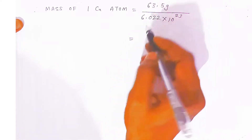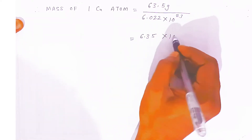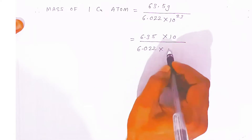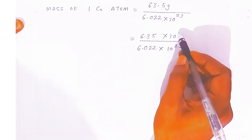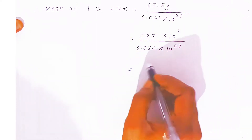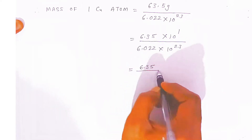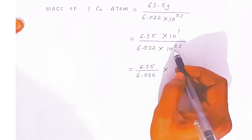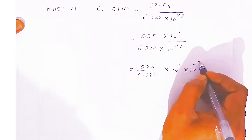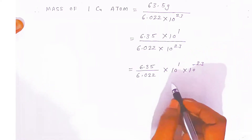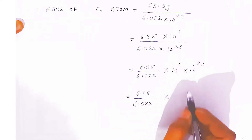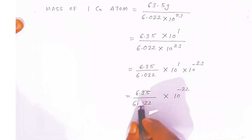You have to shift the decimal: 6.35 divided by 6.022, and the index 10⁻²³ goes to the numerator, it will become 10⁻²³, giving 6.35/6.022 × 10⁻²². Consider this as y. To solve this you use the log table: y = 6.35/6.022 × 10⁻²². Take log on both sides — log y = log 6.35 minus log 6.022. The characteristic before the decimal has one digit, so characteristics will be 1−1=0. You get 0.8028 minus 0.7797, which gives log y = 0.0231 × 10⁻²².